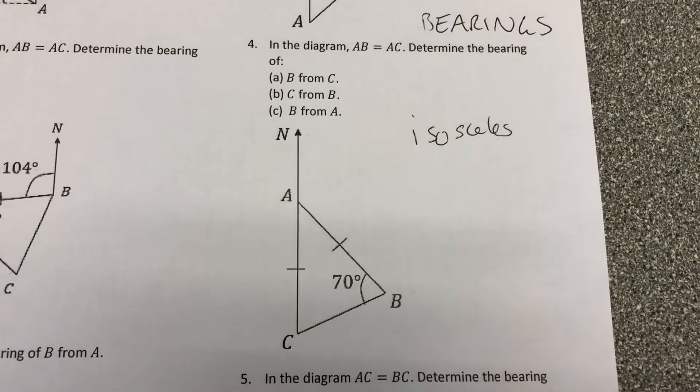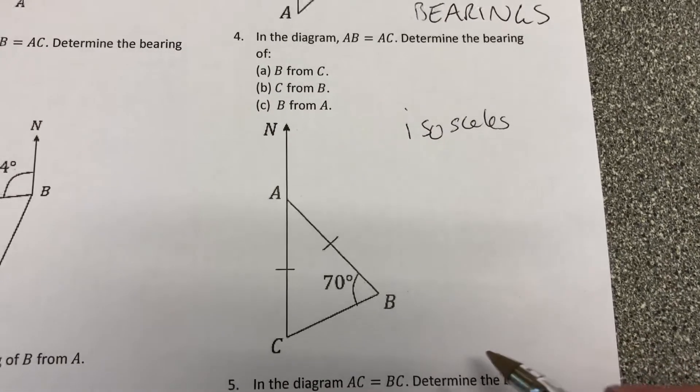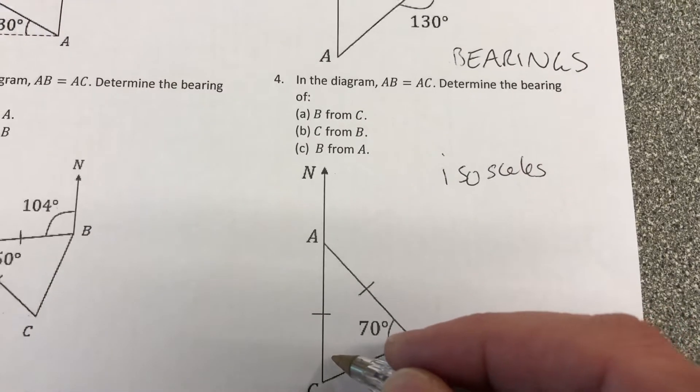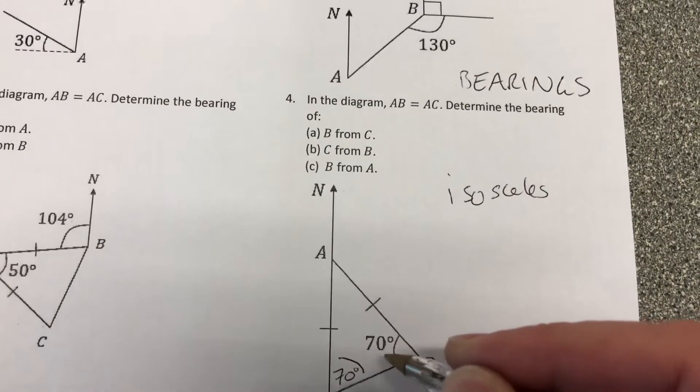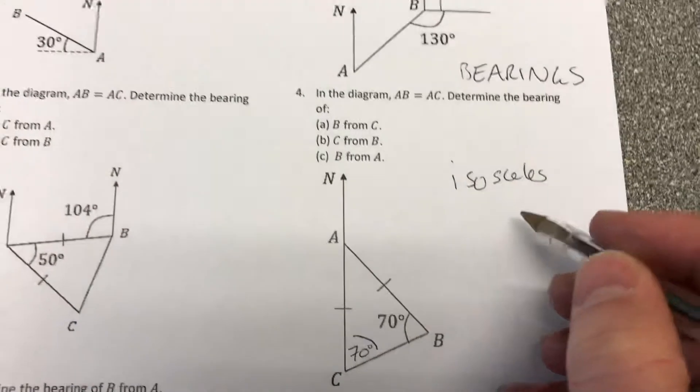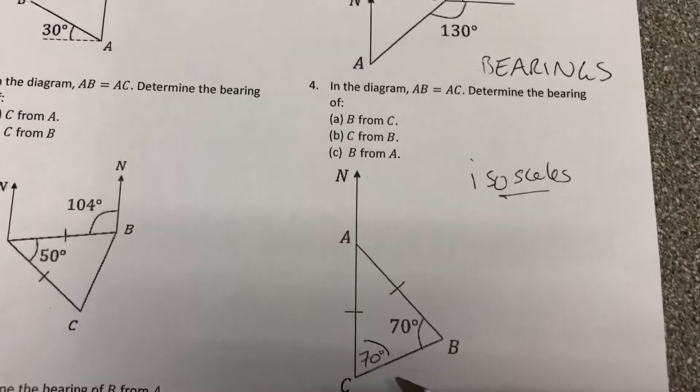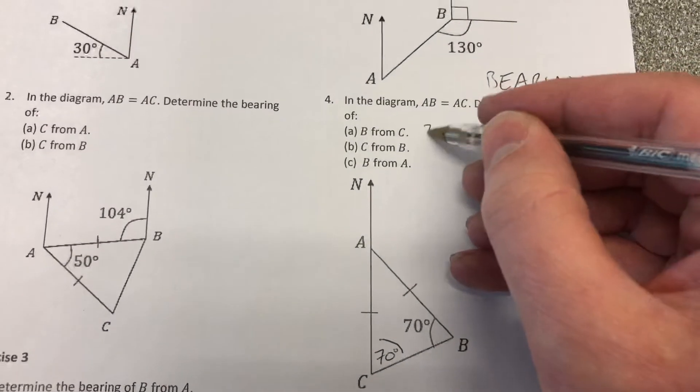So the inner angle of C, so inside the triangle, it's going to be 70 because we know that an isosceles triangle has angles that are the same. Two pairs of angles are the same. So those base angles are equal 70 and 70, so we know that one there is 70.